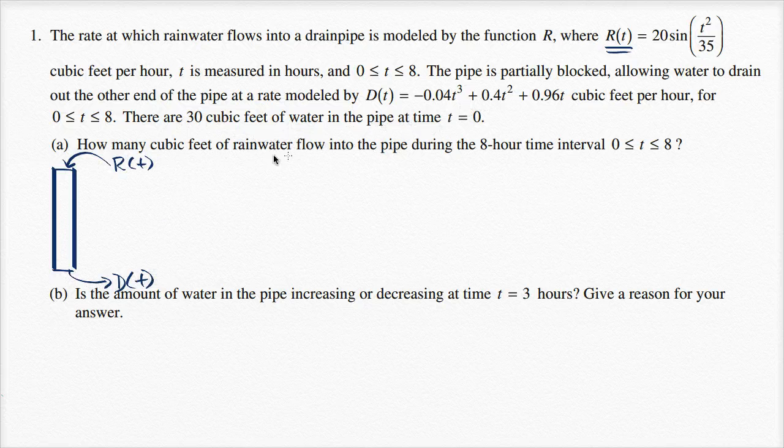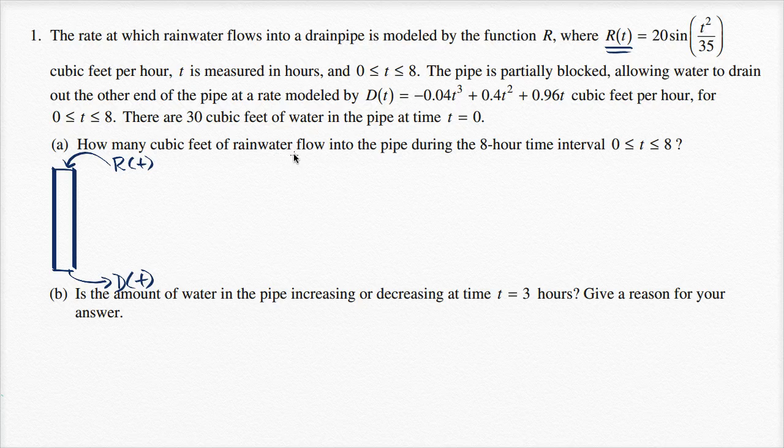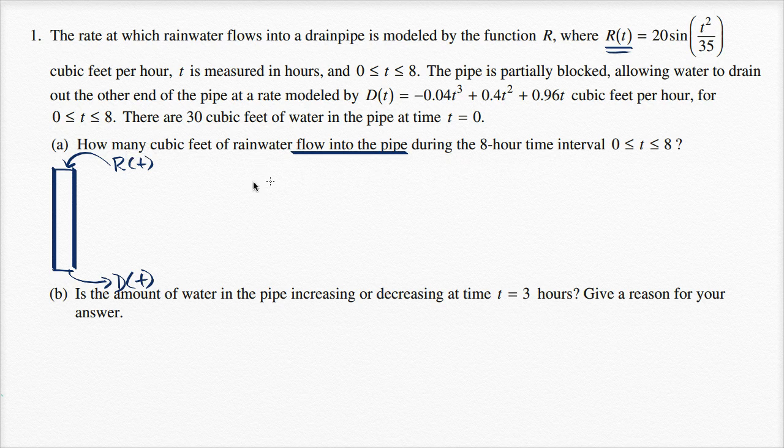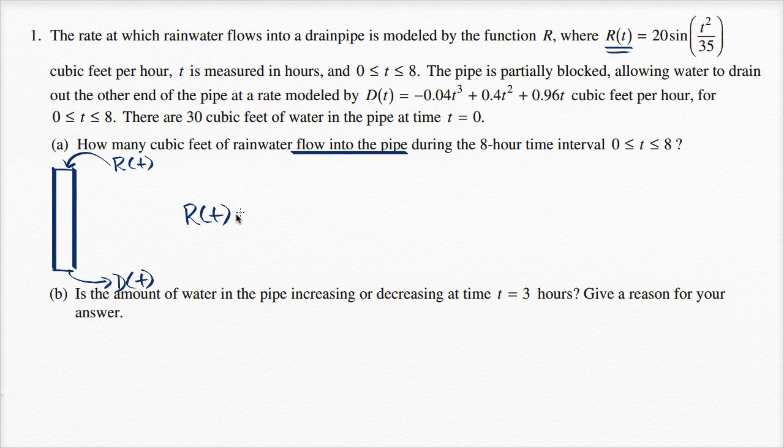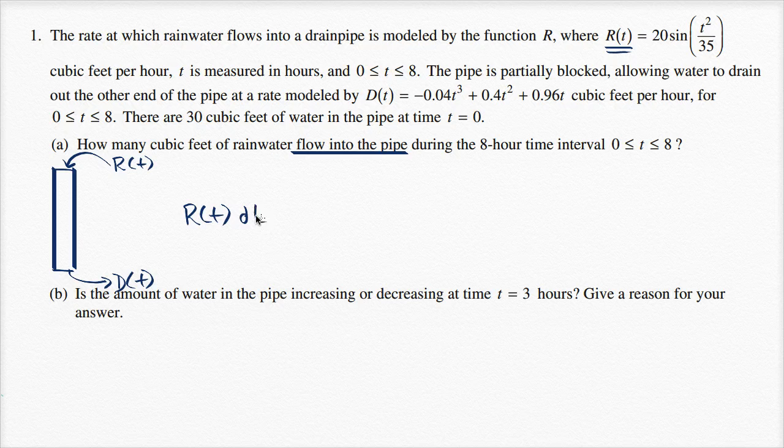So how much water, they're asking how many cubic feet of water flow into the pipe during the eight hour time interval. So if you have your rate, this is the rate at which things are flowing into it. They give it in cubic feet per hour. If you multiply it times some change in time, even infinitesimally small change in time, so dt.